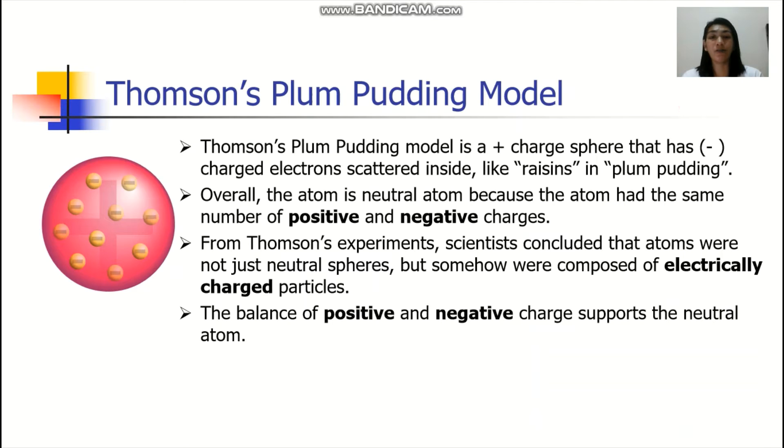Thompson is actually known for his plum pudding model. Thompson's plum pudding model is a positively charged sphere that has negatively charged electrons scattered inside. It's like raisins in the plum pudding. Overall, the atom is a neutral atom because the atom had the same number of positive and negative charges. From Thompson's experiment, scientists concluded that the atoms were not just neutral spheres, but somehow composed of electrically charged particles.